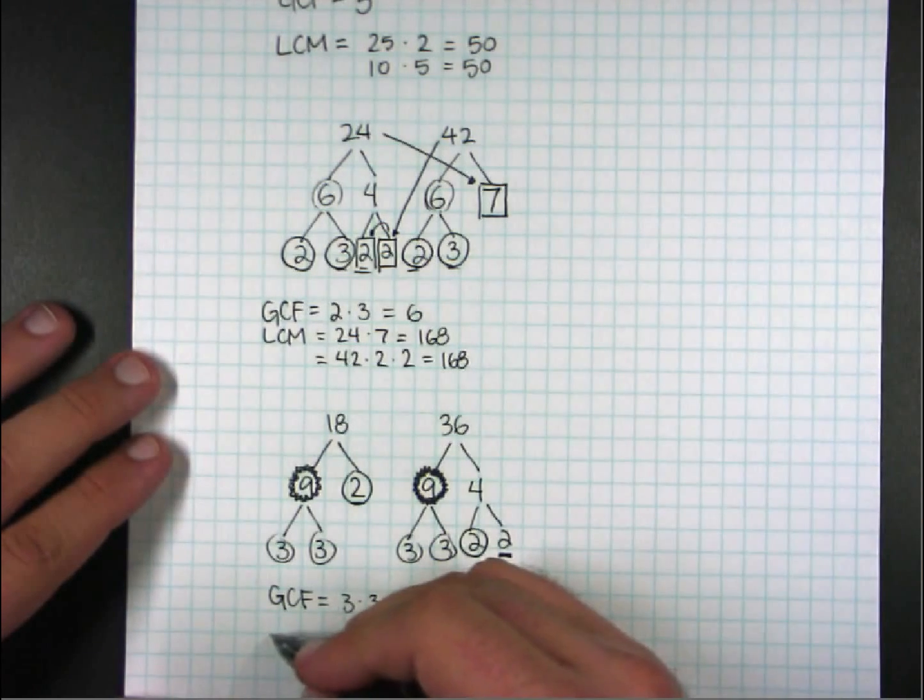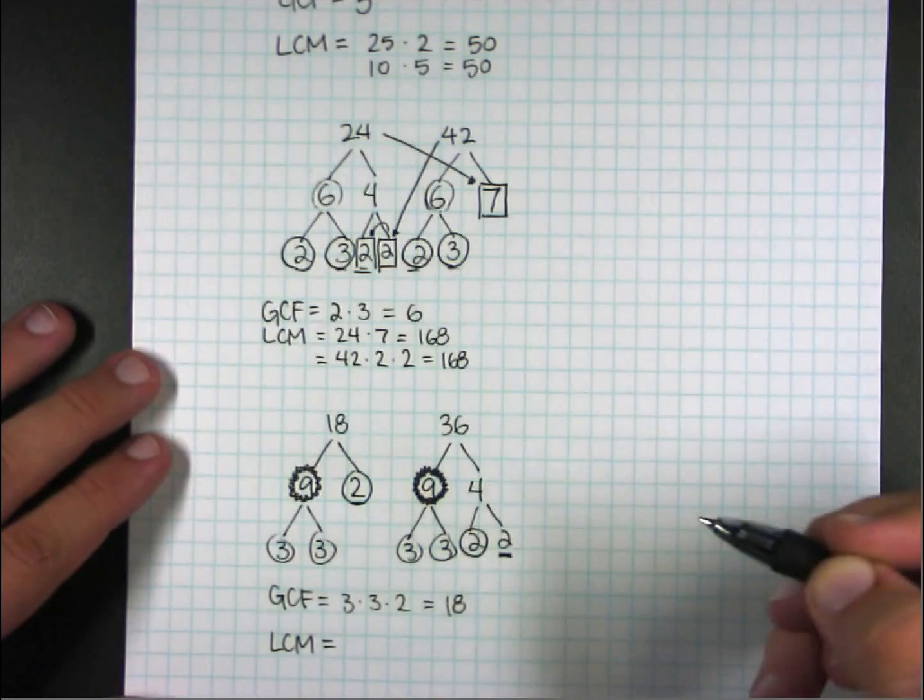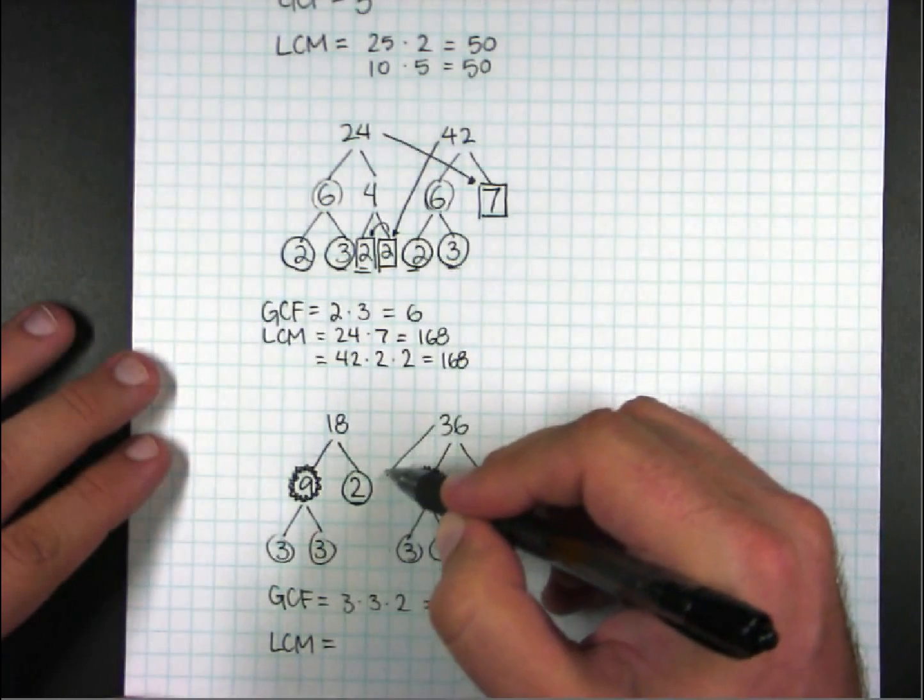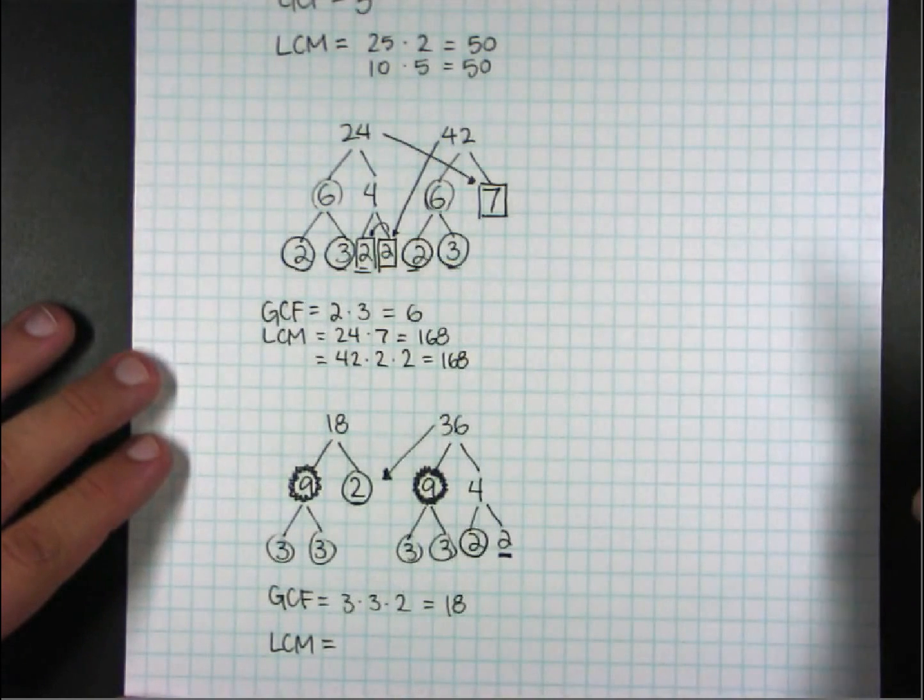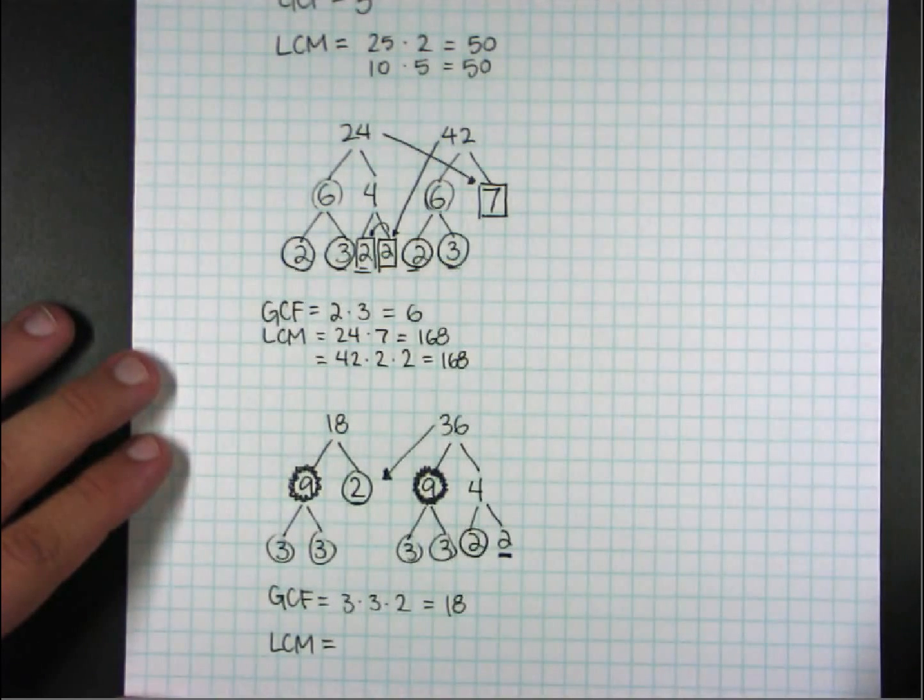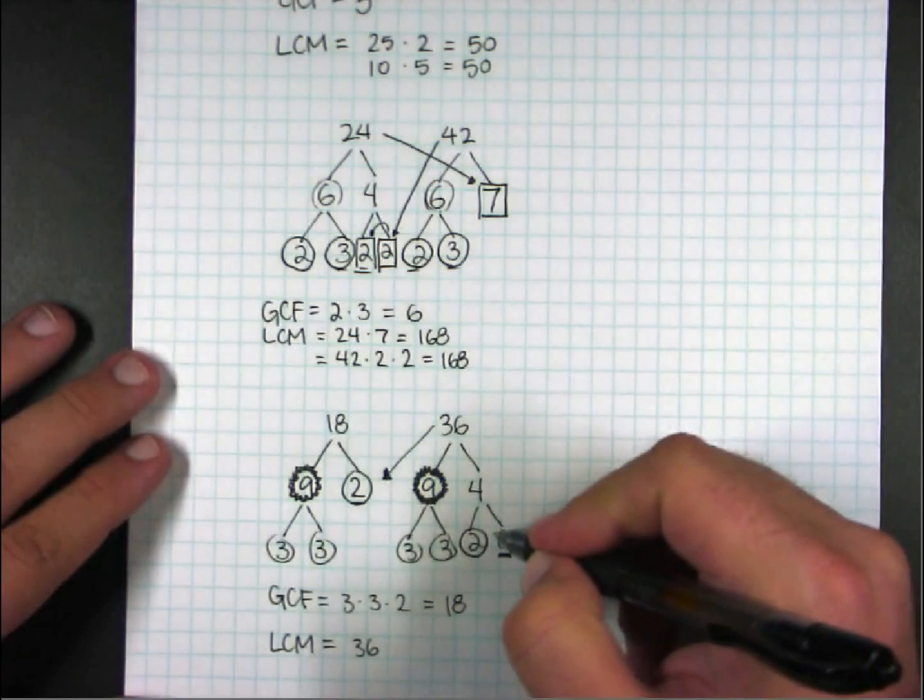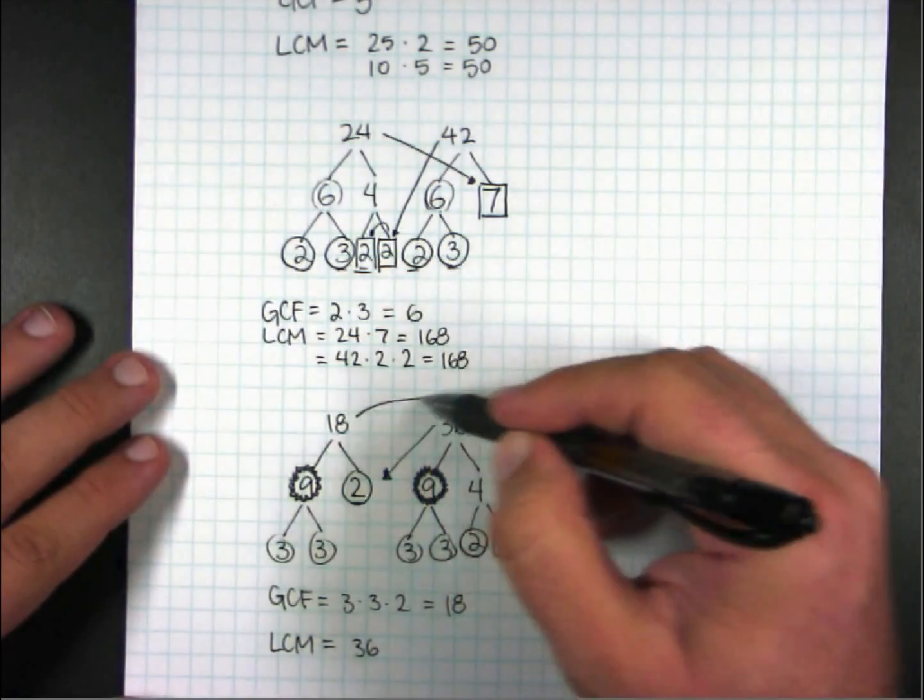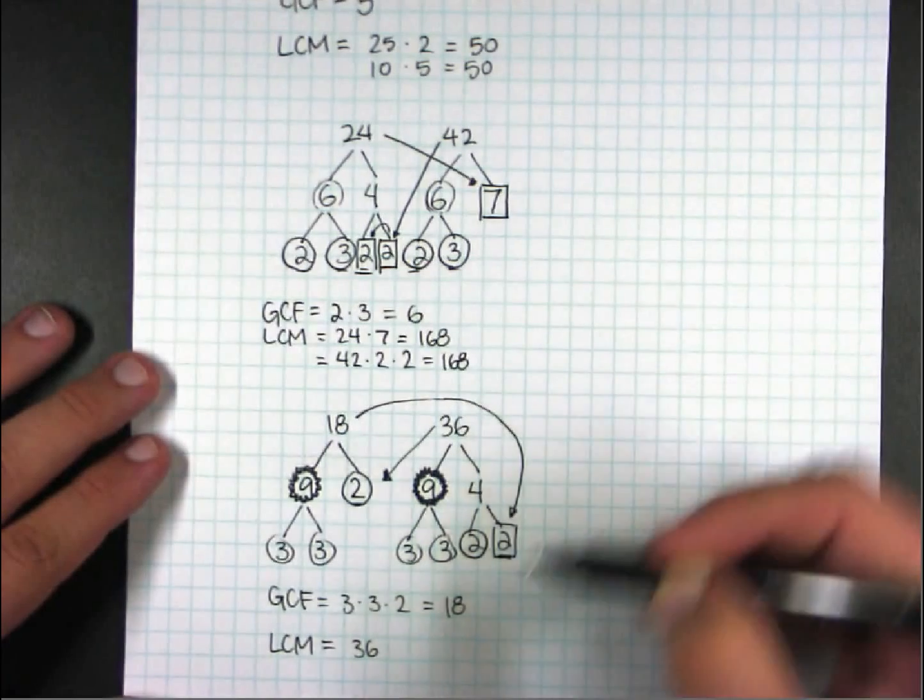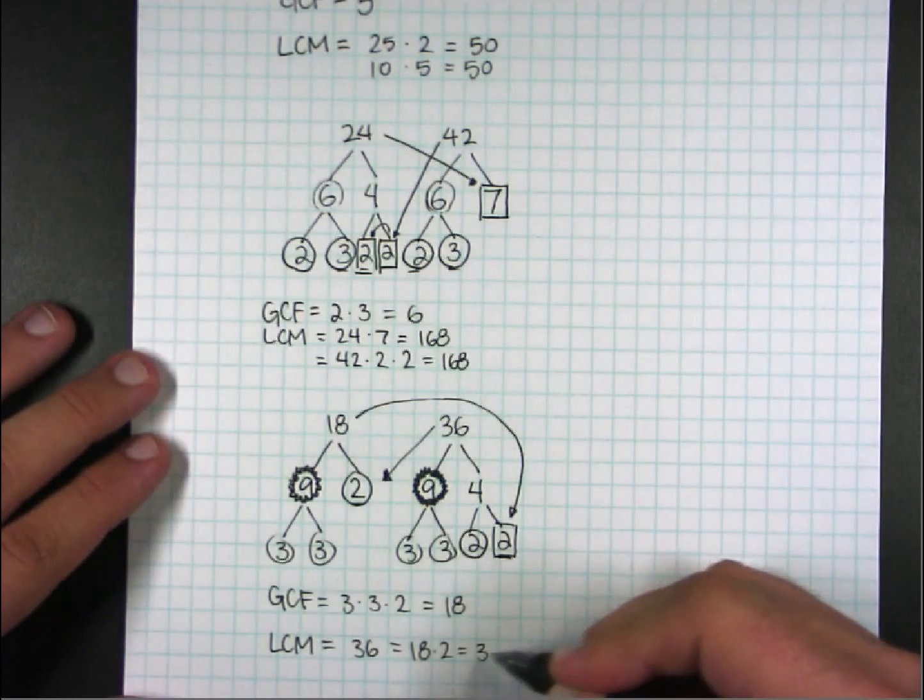So if I want to find the least common multiple, I can start with a number and say, multiply it by what's left on the other side. What's left on the other side is nothing. So it's just 36. And I can verify that by taking my 18 and multiplying it by that 2 and getting 36.